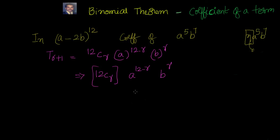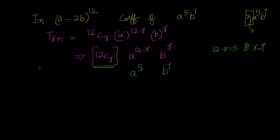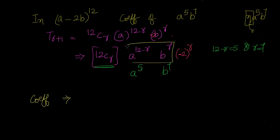We need this to equal a to the power of 5 and b to the power of 7. So either 12 minus r equals 5, or r equals 7 — both give the same result: r equals 7. Now the coefficient is 12C7 into minus 2 whole to the power of 7, since b was minus 2b and r is 7.